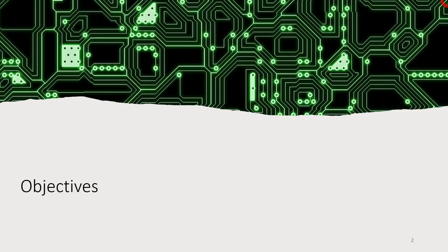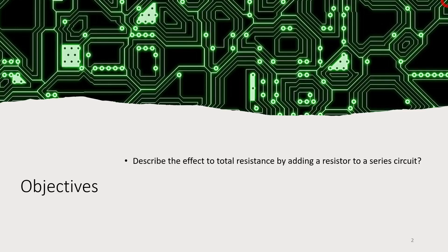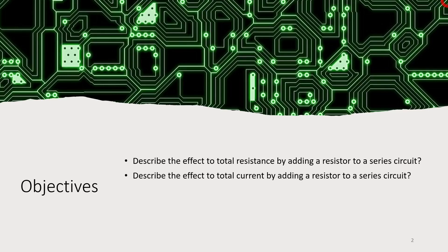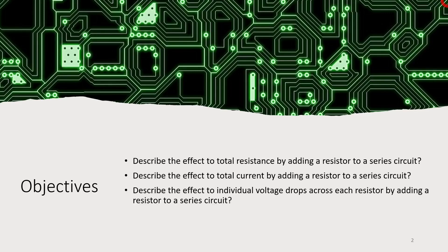Let's look at the objectives for this lesson. First, we want to describe the effect on total resistance by adding a resistor to a series circuit, or multiple resistors, and describe the effect that has on the current and on the individual voltage drops.